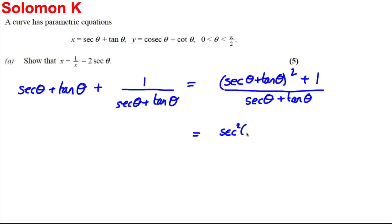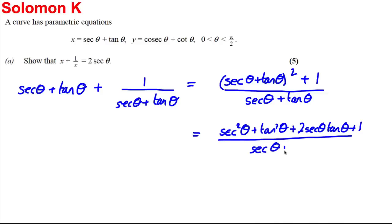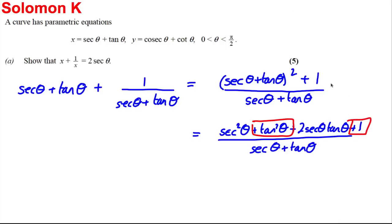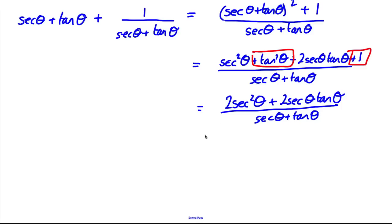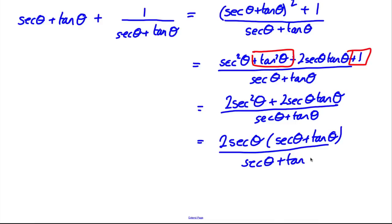That gives us sec²θ plus tan²θ plus 2 sec θ tan θ plus 1, all divided by sec θ plus tan θ. Now, using the identity 1 plus tan²θ equals sec²θ, we get 2 sec²θ plus 2 sec θ tan θ over sec θ plus tan θ. Factorising out 2 sec θ gives sec θ plus tan θ on top, which cancels with the denominator to give 2 sec θ, as required.